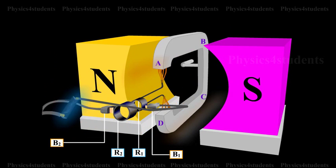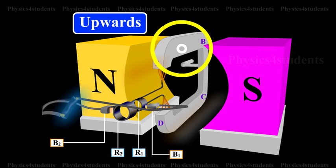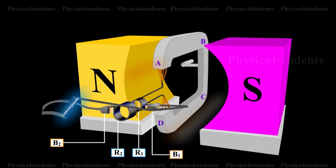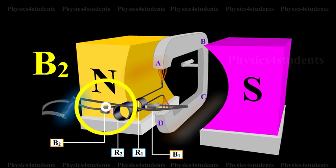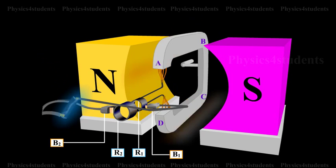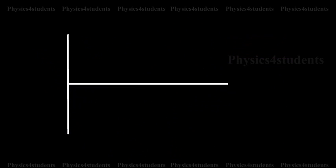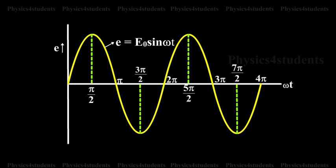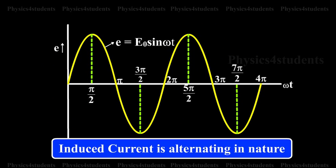On further rotation, the arm AB of the coil moves upwards and DC moves downwards. Now, the current in the coil flows along ABCD. In the external circuit, the current flows from B2 to B1. As the rotation of the coil continues, the induced current in the external circuit keeps changing its direction for every half a rotation of the coil. Hence, the induced current is alternating in nature.